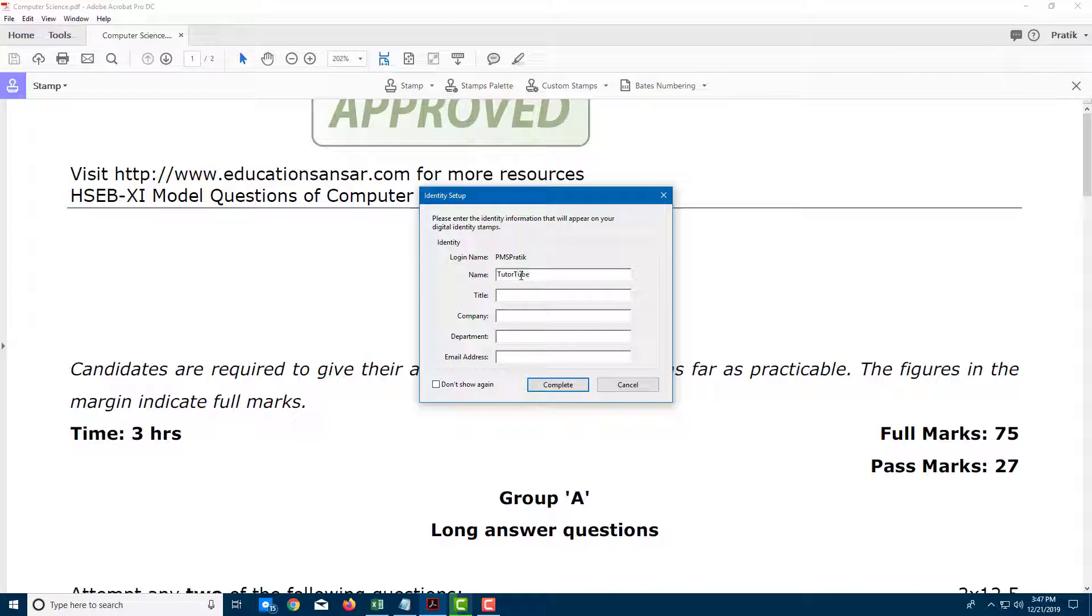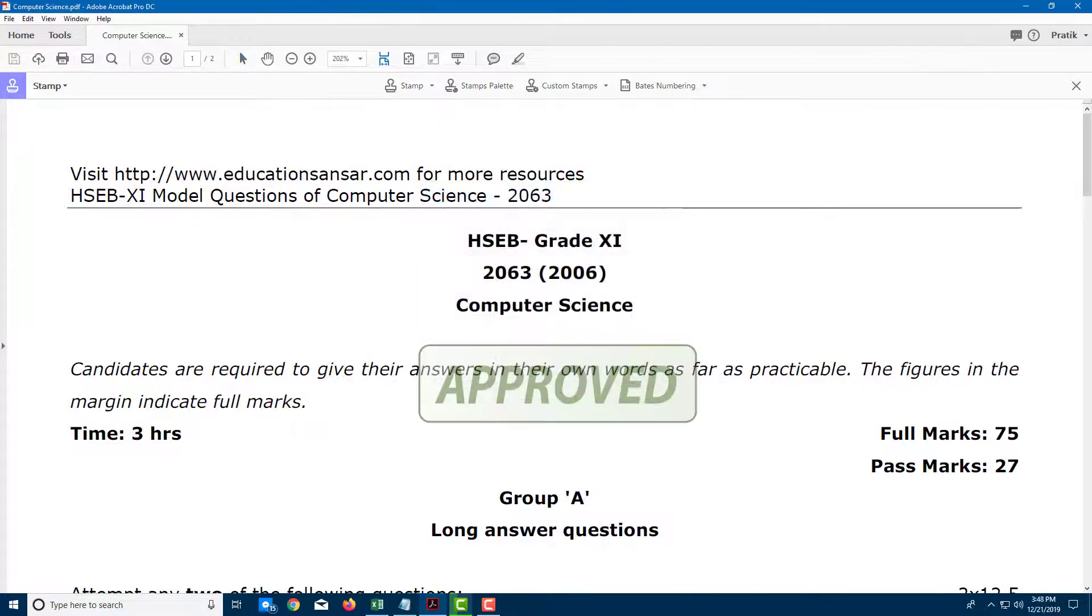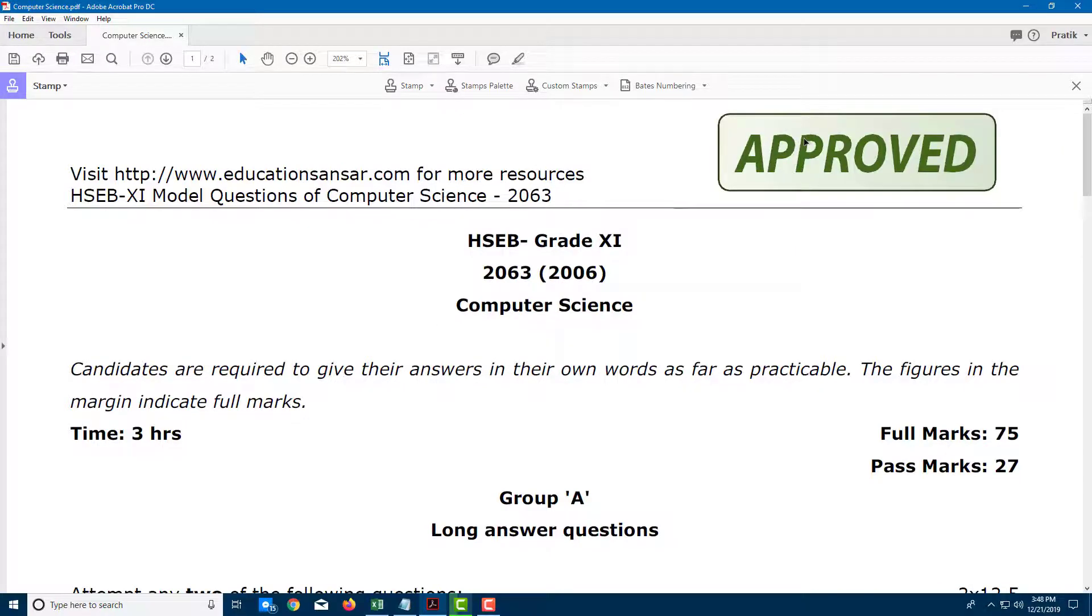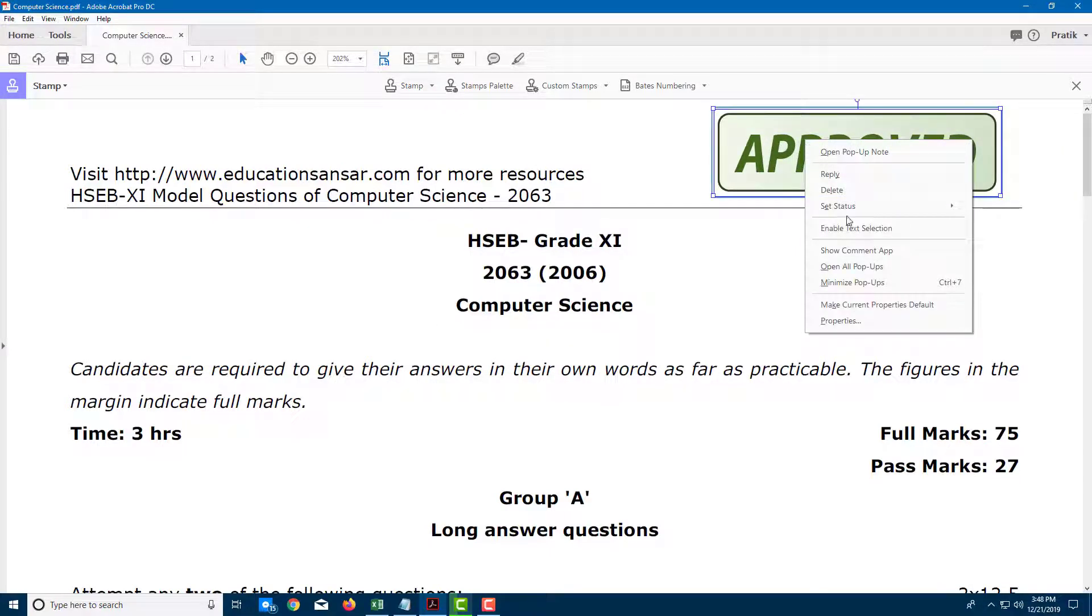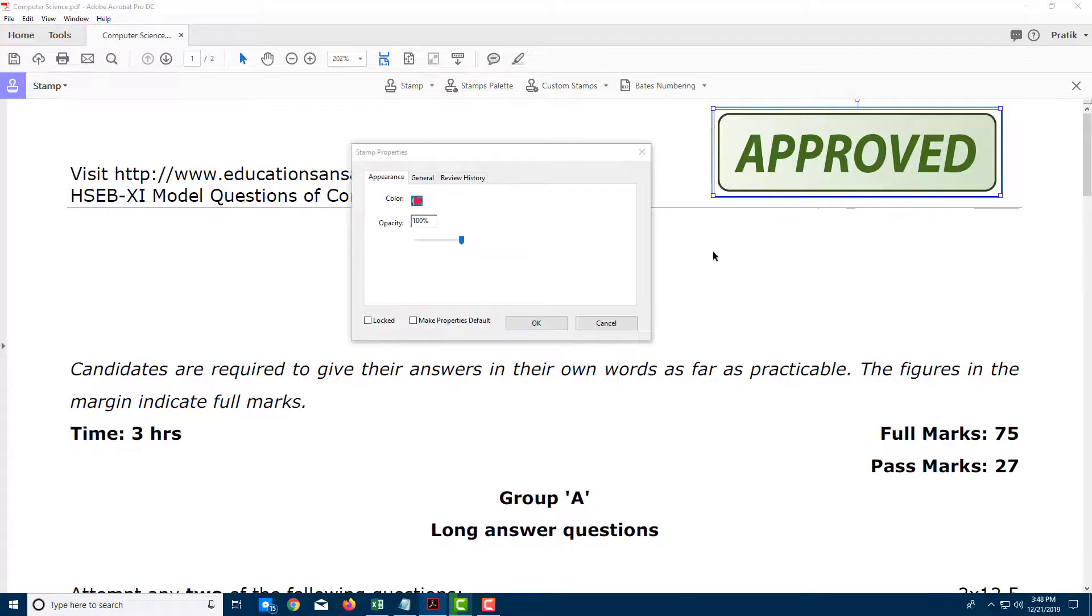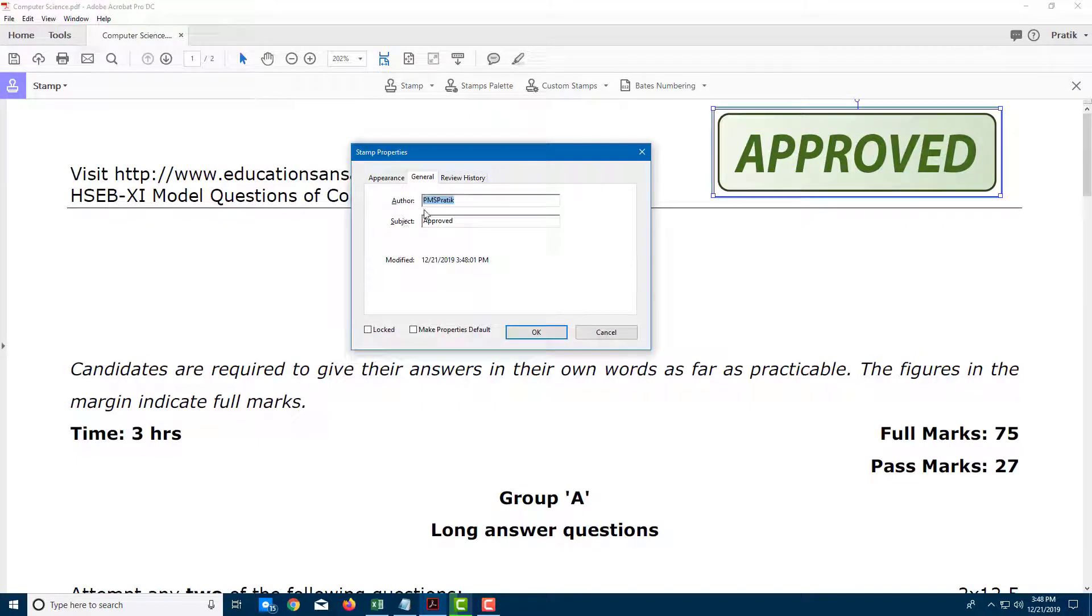I'm just going to add in the name, not any other details. I'm just going to complete it, click it, and there's my stamp right here. If you right-click and go into its properties, you'll be able to see the author and review history—everything is approved right there.